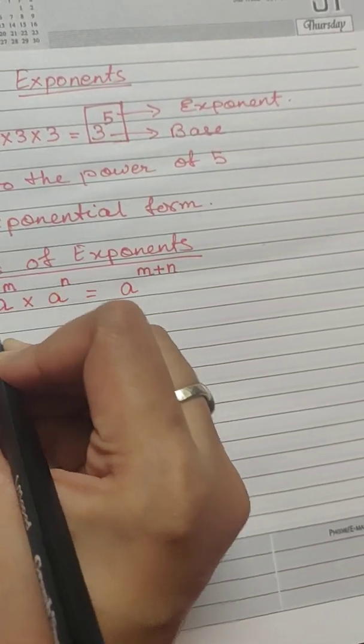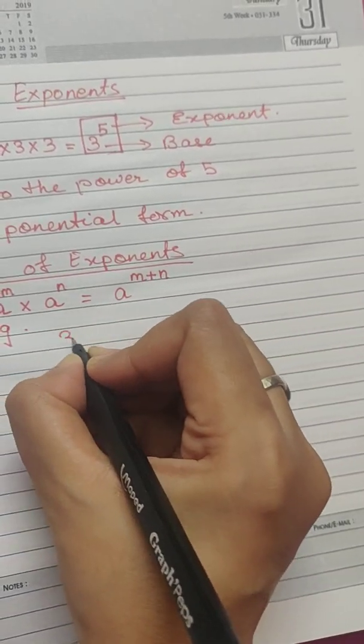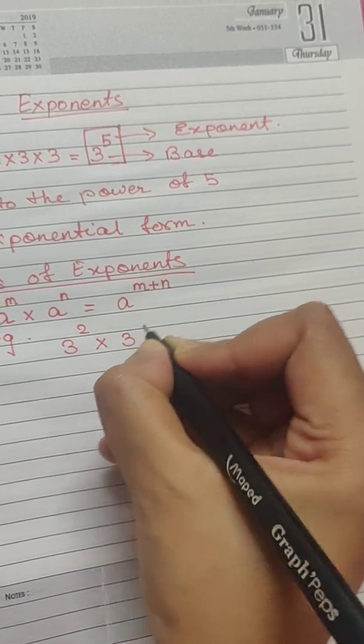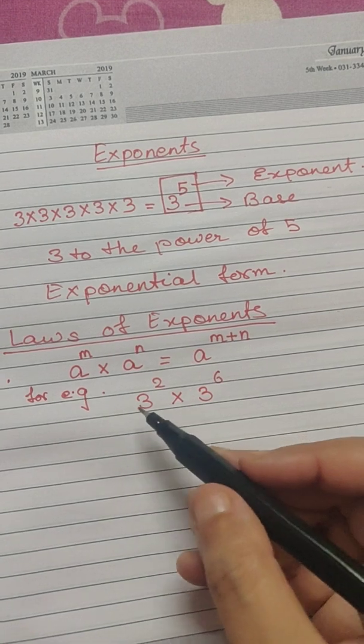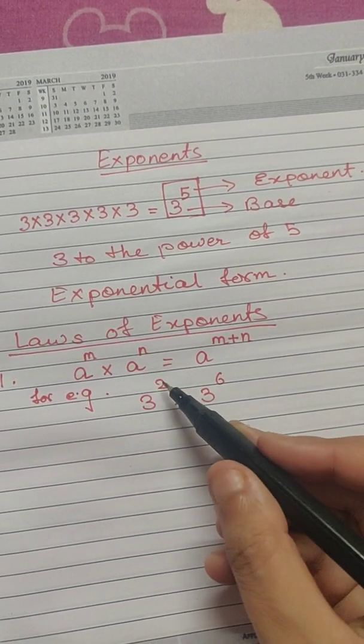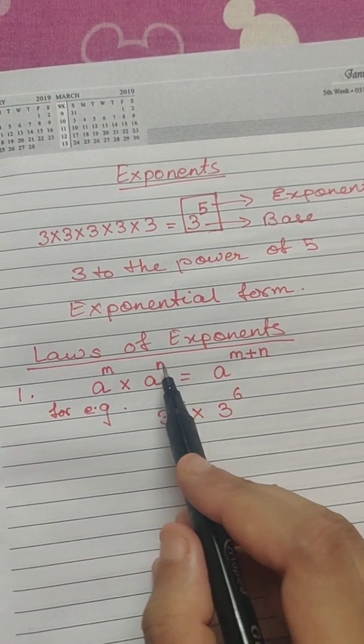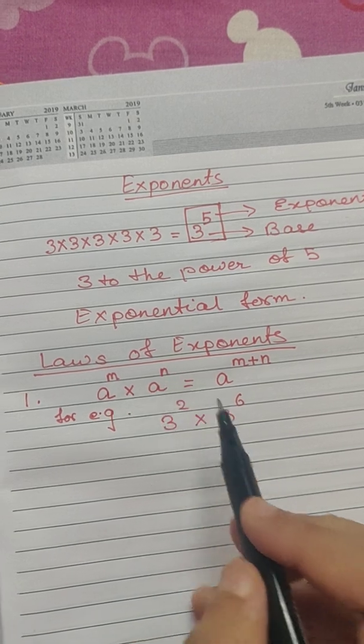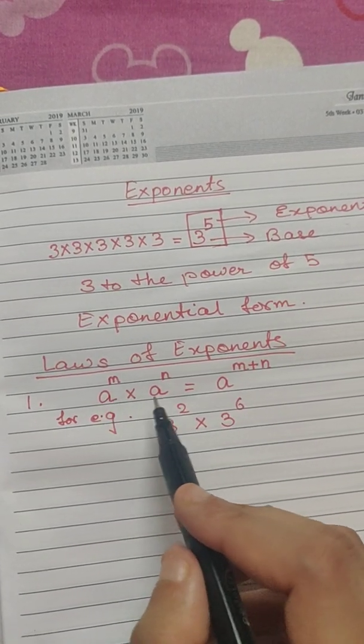For example, let me give you an example. 3 to the power of 2 into 3 to the power of 6. Notice that here both the bases are same but the exponents are different. That's why m and n, two different alphabets have been used in the law for two different exponents.